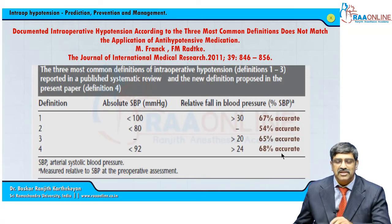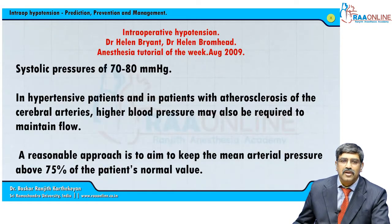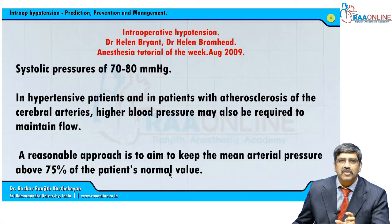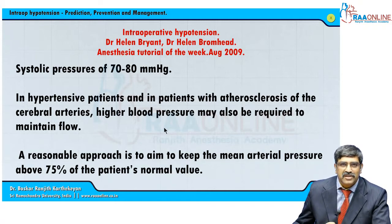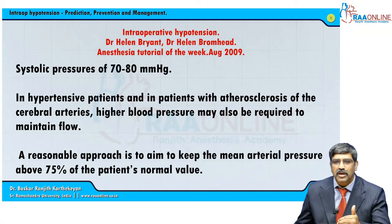These are all the various definitions for intraoperative hypotension. The goal is to maintain the mean arterial pressure above 75 percent of the measured value. In patients with cerebral ischemia or hypertensive patients, you tend to maintain the blood pressure slightly higher than normal to maintain adequate blood flow.